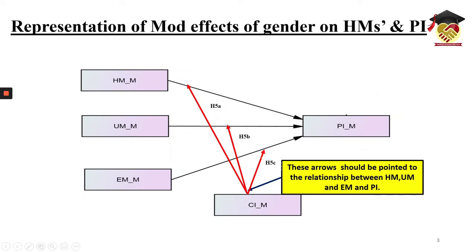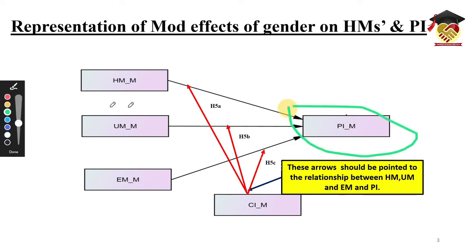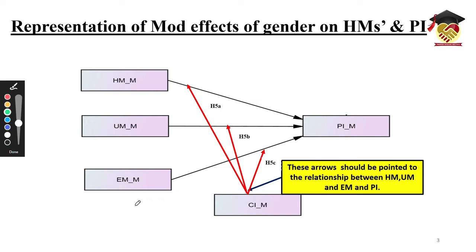Our three independent variables or factors are HM, UM, and EM. This is our dependent variable. In this case we have to take the mean value of all the constructs — for the independent variables, purchasing intention, and consumer innovativeness — because we ask different questions to measure each construct. Please remember that we have tested each relationship individually and independently when using the PROCESS macro.